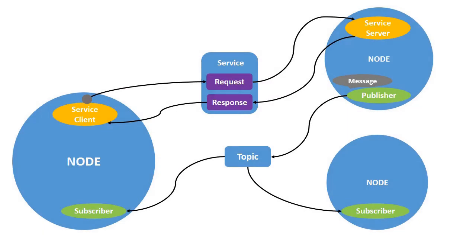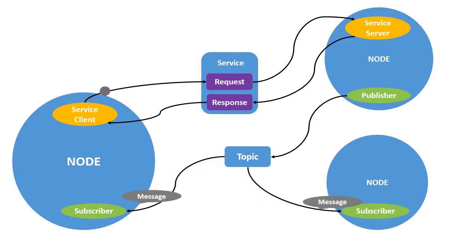Now let's learn about the ROS2 node — let's use this animation to get a better idea. In simple words, a ROS2 node is a fundamental ROS2 element that serves a single modular purpose in a robotic system. Nodes perform computation — for example, one node can perform motion planning, one can perform wheel motor control, one can perform object detection, etc. Nodes communicate with each other using ROS2 topics, services, and actions, which you will learn in later tutorials. A ROS2 node is written using a ROS2 client library, such as the C++ client library or the Python client library.